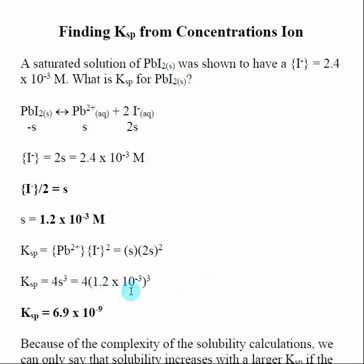I take 1.2 × 10⁻³, raise it to the third power, multiply by 4—that gives me the Ksp. So this Ksp for the lead iodide—this is the other version, kind of a mirror image of what we've been calculating. Here I give you the equilibrium concentration of something, I then find S from that, and then I plug the S value into this algebraic expression for Ksp, and from that I can calculate the Ksp.